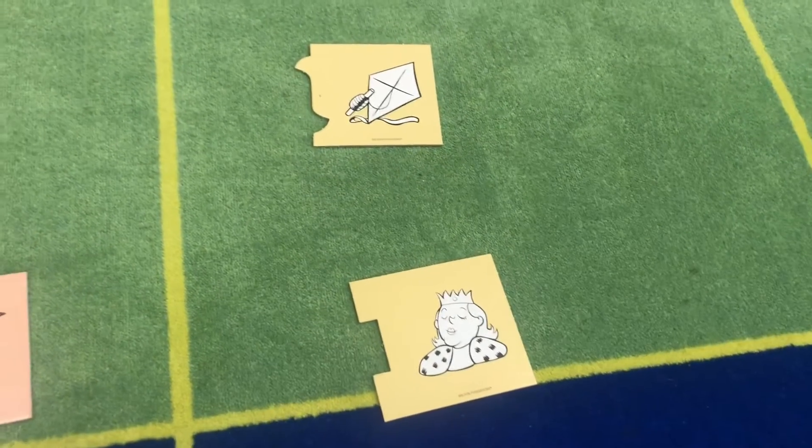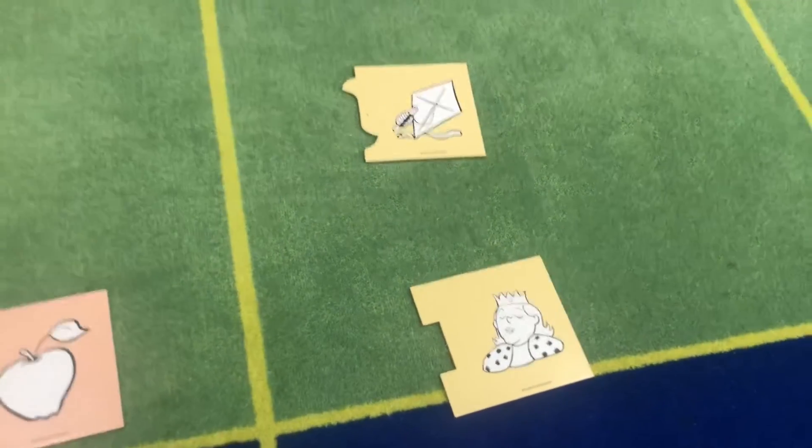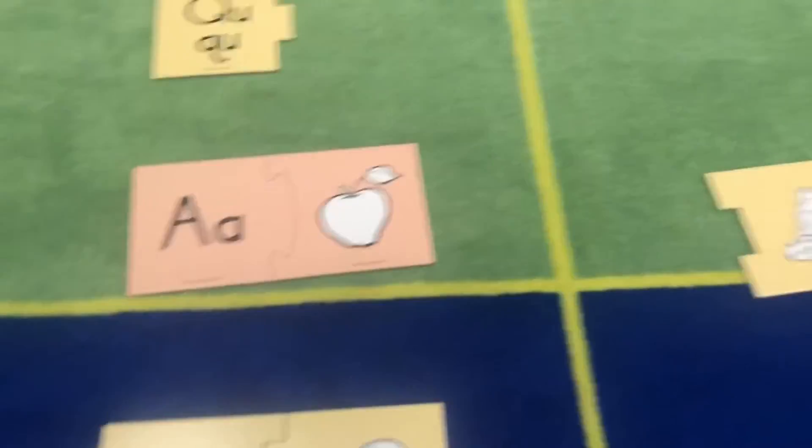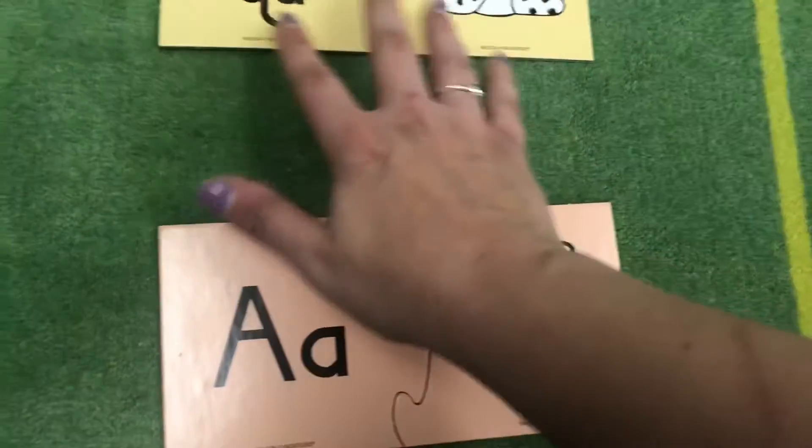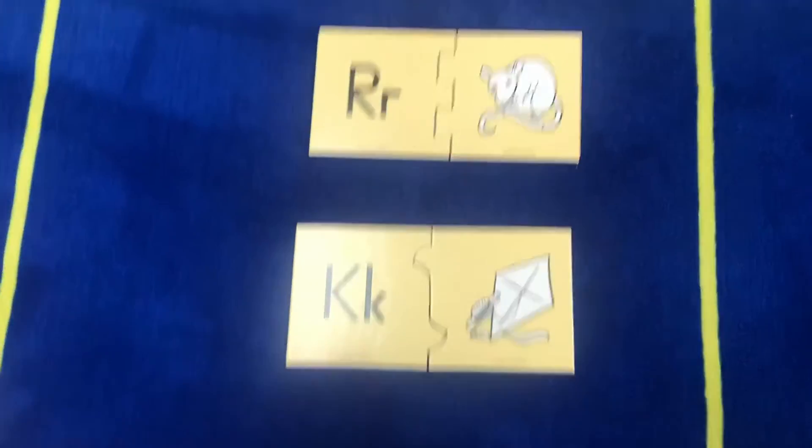And then K. Which one starts with K? Kite. So you would match them together. And then here's the queen to go with the QU. So that's one way you can do it.